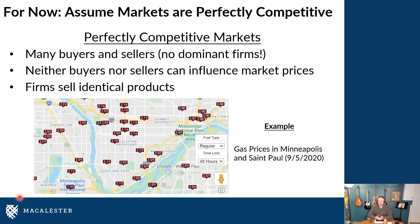In perfectly competitive markets, there are many, many buyers and sellers. This means there are no dominant firms. As the buyer, you can't walk up to the gasoline station clerk and say you'd rather pay $1.50 when the sign says $1.99 — they're most likely going to laugh at you. So you have to take prices as they are, and sellers also have to take prices as they are. Neither sellers nor buyers can influence the market price, and firms in perfectly competitive markets are selling identical products.